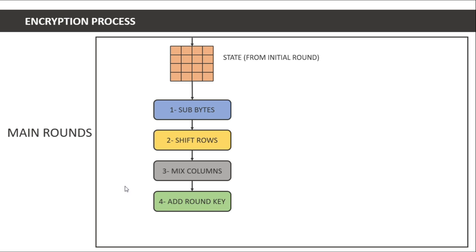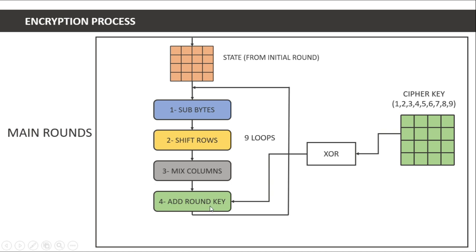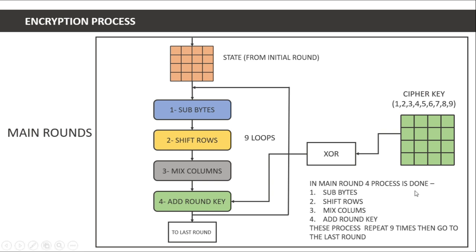We XOR using cipher keys one through nine across nine loops. In each loop: sub byte happens, then shift rows, then mix columns, then add round key using the corresponding cipher key. After nine repetitions of the main round, the message state goes to the final round. In the main round these four processes — sub byte, shift rows, mix columns, and add round key — repeat nine times.